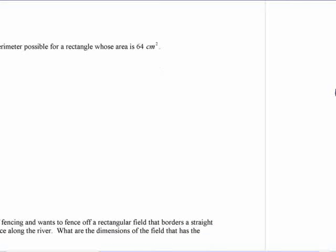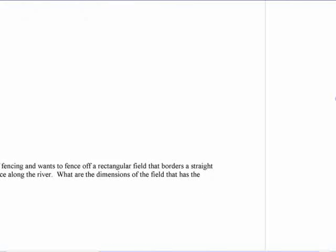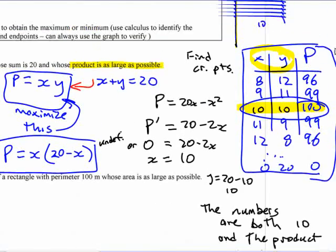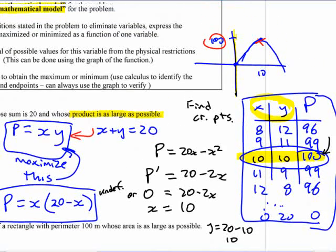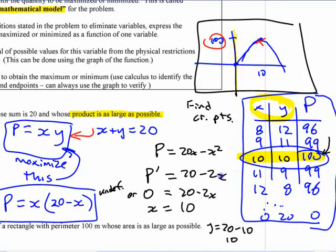You might encounter something where it's a difficult situation to think about. Draw a picture, think about it. Investigate it with numbers first. Just try this until you understand what's going on a little bit, and then you can confirm it with the algebra. You can confirm it with a graph, of course. If you graphed it, you'd find it looked something like that, right? If you graphed this function here, the product versus one of the numbers.